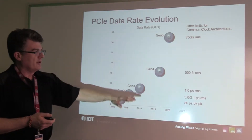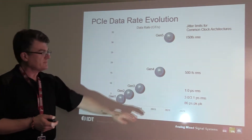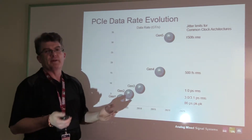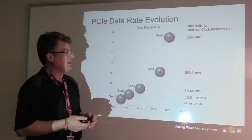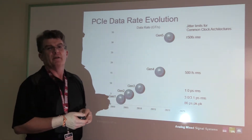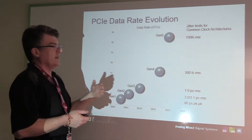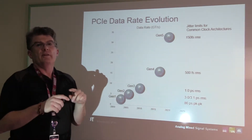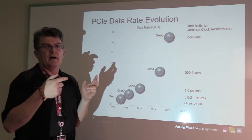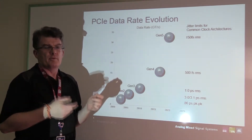Along the way, the clock specs changed too. The original Gen 1 specification was done at 86 picoseconds peak to peak. And then beginning with Gen 2, the clock specifications changed to RMS numbers.